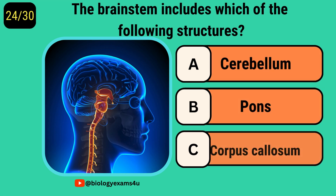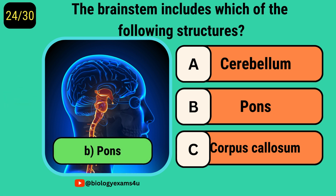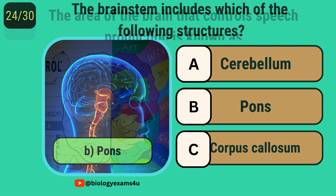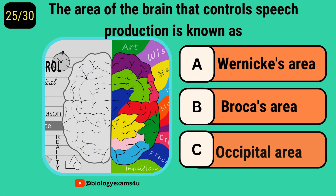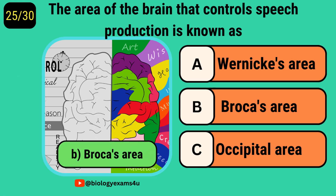The brainstem includes which of the following structures? Pons. The area of the brain that controls speech production is known as? Broca's area.